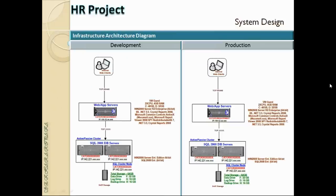Next is the infrastructure architecture diagram, which addresses infrastructure requirements. Once you know what to build, you need to determine where to host it — you need a development environment, a staging/testing environment, a user acceptance testing environment, and a production environment, each requiring servers. The infrastructure architecture diagram specifies the servers, their operating systems, and configurations. I'm showing the production diagram here, with the development environment on the left and production environment on the right.